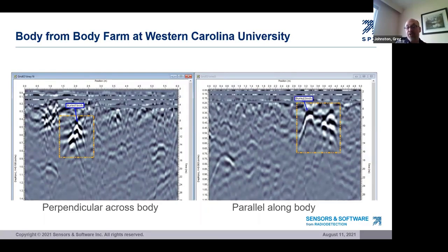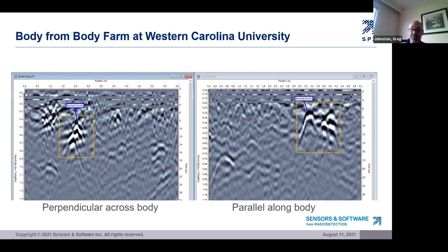Western Carolina University in North Carolina has a human decomposition facility, also known as a body farm. A few years ago, Sensors and Software was invited to collect GPR data at the facility to train their forensic anthropology students on the capabilities of GPR. We collected grids of data over several buried bodies at the site. This shows selected lines from one of the bodies: on the left is the GPR line that crossed the body perpendicularly, and on the right is the line that crossed the body along its length. Good examples of what the physics predicts — strong GPR responses due to the large contrast between the body and the soil.